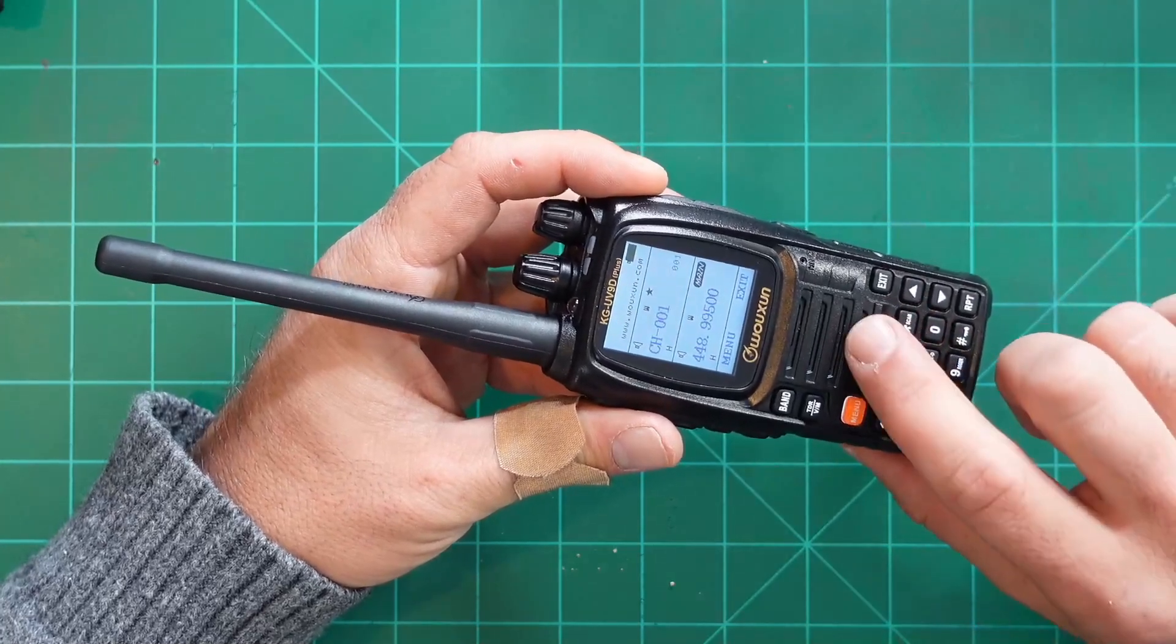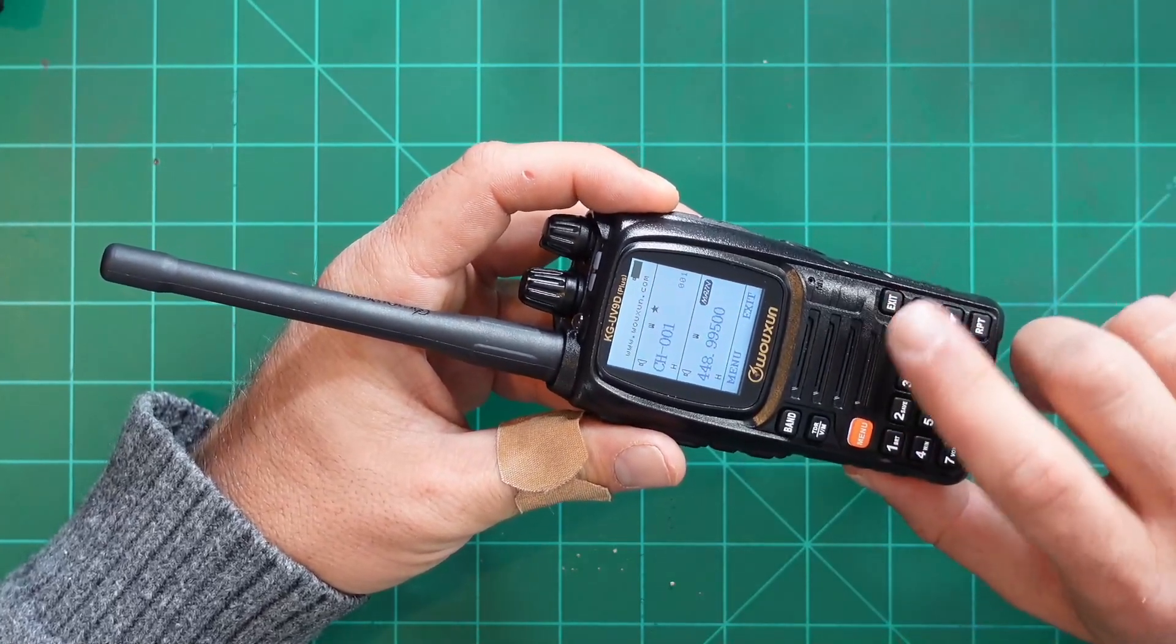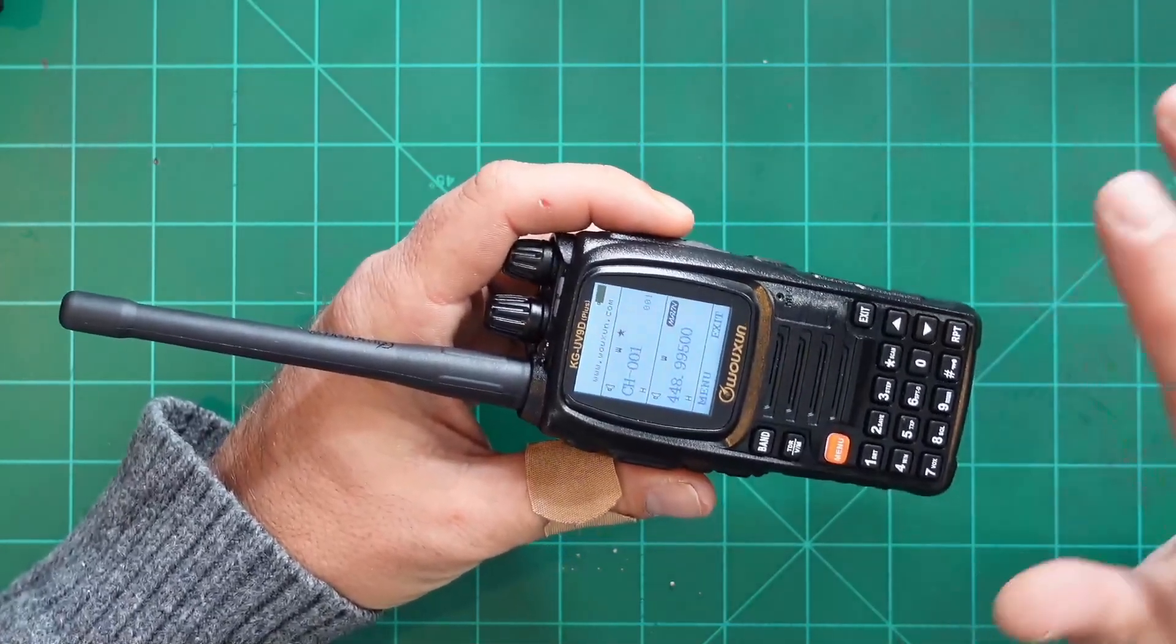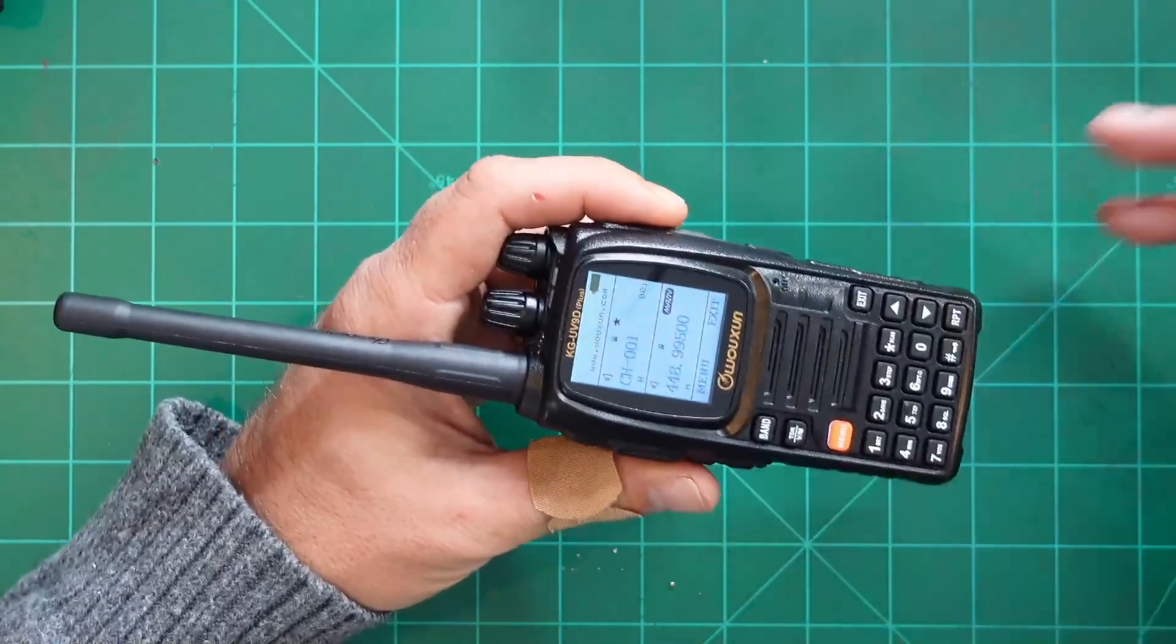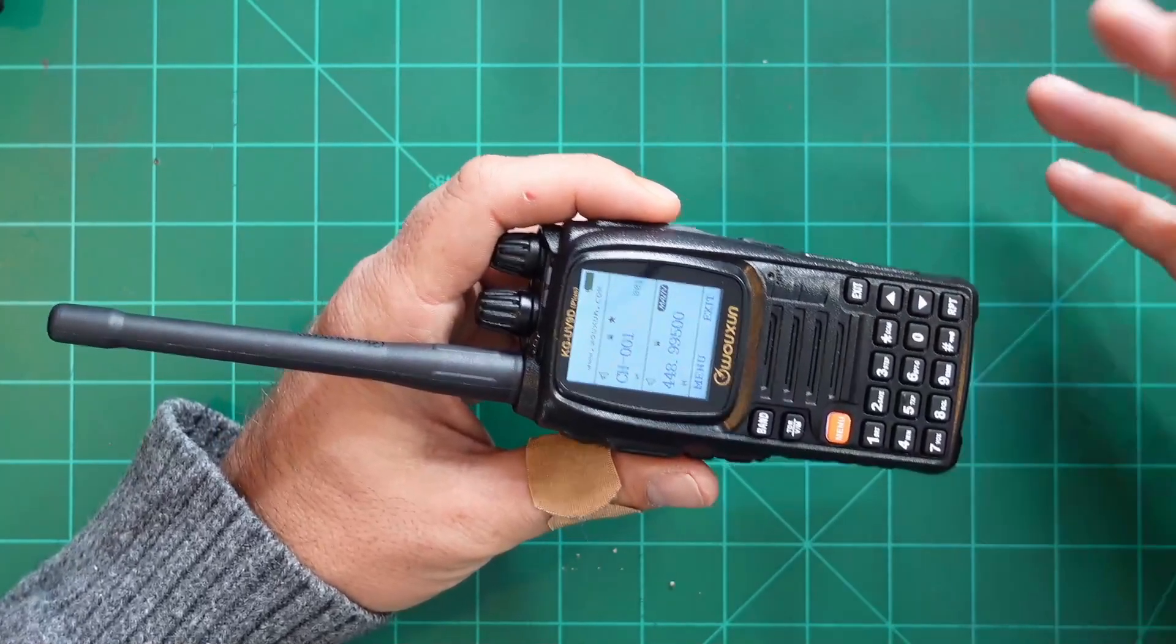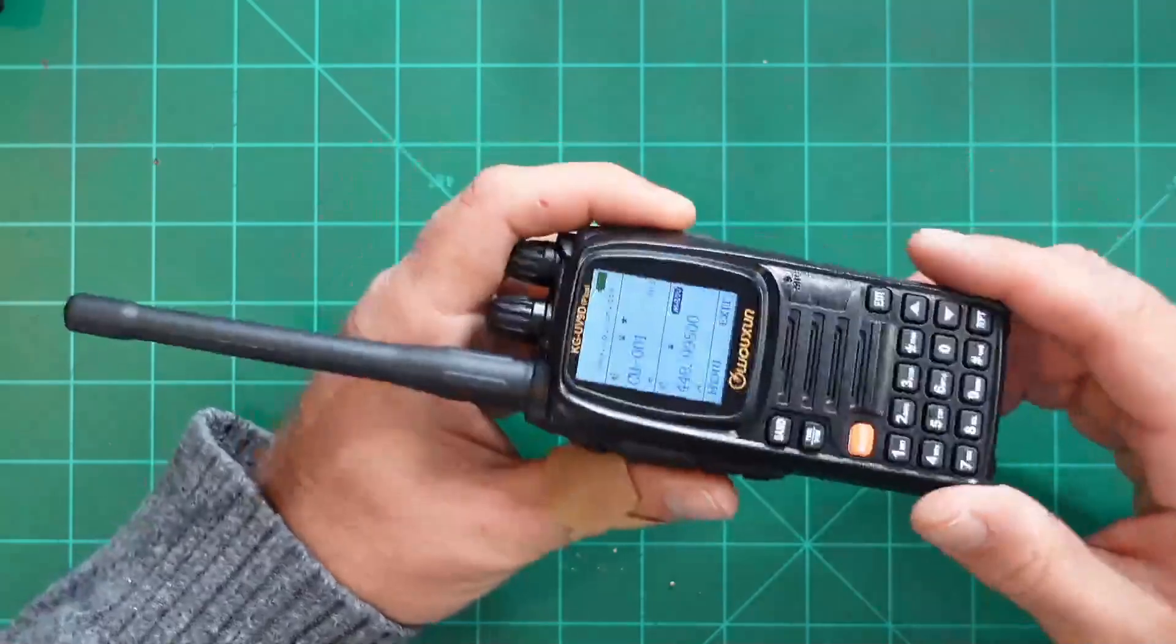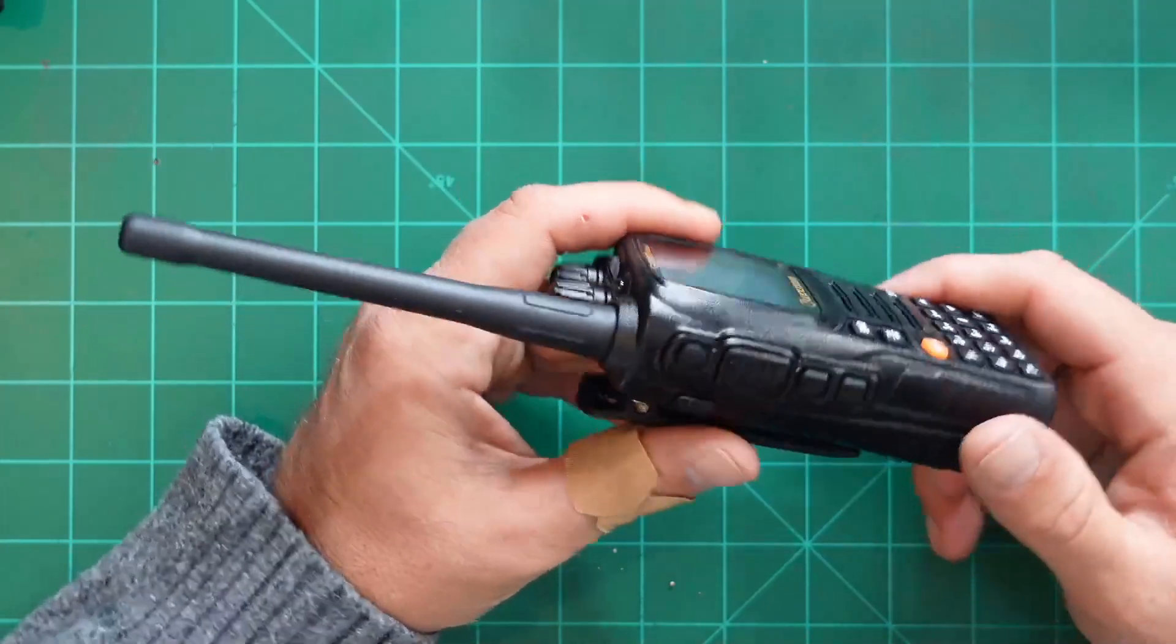Now the radio is advertised as up to five watts on two meters. And I did test this. And on average, I got about 5.2 watts on two meters. So that's pretty good. On UHF, it's advertised as around or up to four watts on 70 centimeters. And I got about 3.21 watts on 70 centimeters.